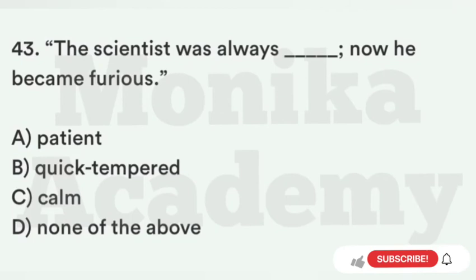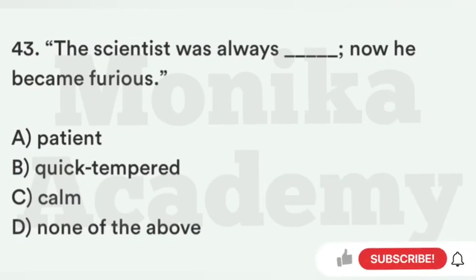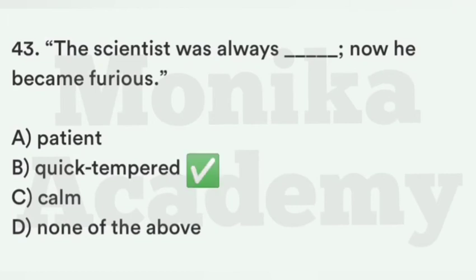Question 43: The scientist was always ___, now he became furious. Option A: Patient. Option B: Quick-tempered — जिसे बहुत जल्दी गुस्सा आ जाता है. Option C: Calm. Option D: None of the above. The correct answer is B, quick-tempered — The scientist was always quick-tempered, now he became furious मतलब वो पहले से ही जल्दी गुस्सा करने वाला था, अब और violent हो गया था.